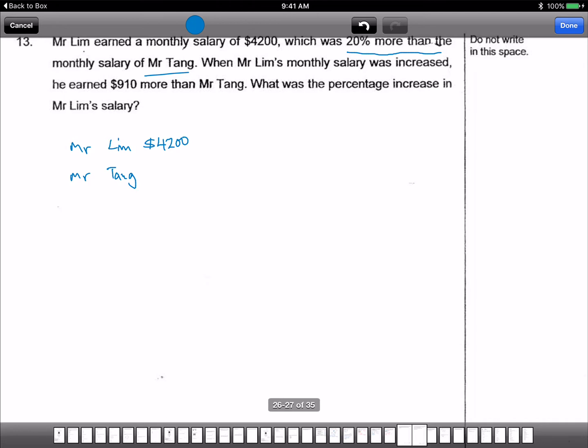You see, $4,200 is equivalent to 120%. Why? Because it's 20% more than Mr. Tang. So I want to find 100%. Since $4,200 is 120%, I take $4,200 divided by 120 equals to $35.